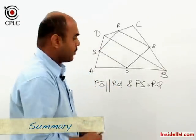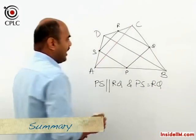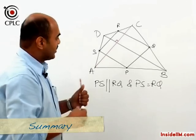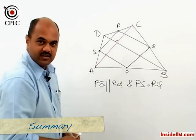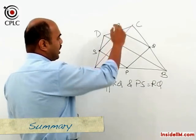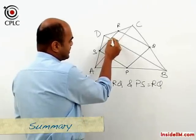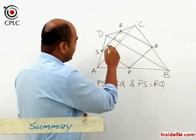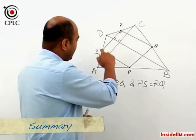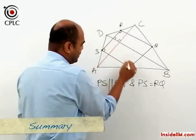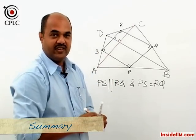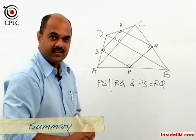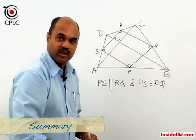Now let's take a variation. Suppose we also join diagonal AC, and the question states that the diagonals of ABCD are perpendicular to each other — they intersect at right angles. Then AC is parallel to RS, and since the angle between the diagonals is 90 degrees, the corresponding angle in PQRS also becomes 90 degrees using interior angles in parallel lines. Similarly, all angles in PQRS become 90 degrees, so we can conclude that PQRS is a rectangle.